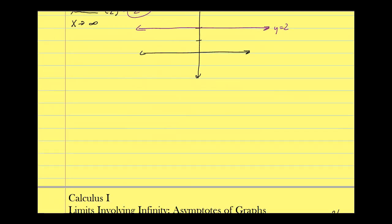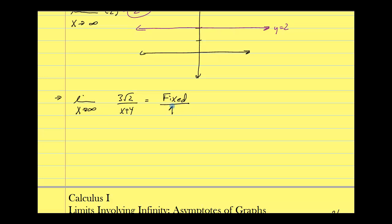Let's look at the limit as x approaches infinity of 3 root 2 over x plus 4. I don't want to graph this — I just want to analyze it. The numerator is never changing; it's fixed. The denominator is going toward infinity plus 4, which is another degree of infinity, so it's increasing. I have a fixed numerator and an increasing denominator, so this overall fraction is going toward 0 as well.